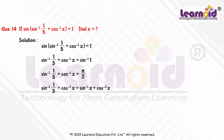Cancelling cos inverse x from both sides, we will get sin inverse 1 by 5 is equal to sin inverse x, so x is equal to 1 by 5.